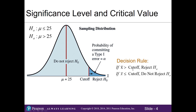This would be our decision rule when working with a one-tailed upper-tailed test. If our sample is less than or equal to the cutoff point we would not reject the null, because we do not have enough evidence to state otherwise — so we'd be in this part of our curve.